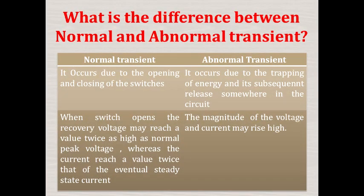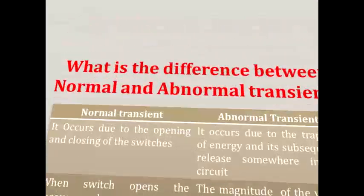What is the difference between normal and abnormal transients? Normal transients occur due to the opening and closing of switches, but abnormal transients occur due to the trapping of energy and its subsequent release somewhere in the circuit. In normal transients, when a switch opens, the recovery voltage may reach twice the normal peak voltage and the current may reach twice the eventual steady-state current, whereas in abnormal transients the magnitude of voltage and current may rise much higher.